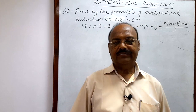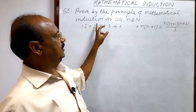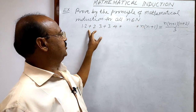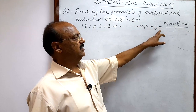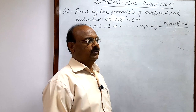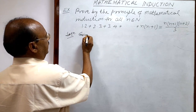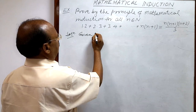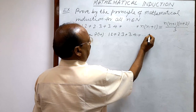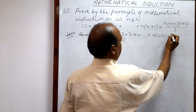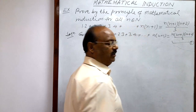Welcome students. Let us see a very interesting and important question from the chapter mathematical induction. The question is: prove by the principle of mathematical induction for all n belonging to the set of natural numbers, 1·2 + 2·3 + 3·4 + ... + n·(n+1) = n(n+1)(n+2)/3. The mathematical statement is denoted by P(n), and we call this relation number 1.